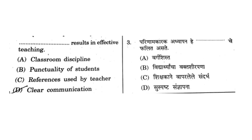Next question: dash dash dash is a result of effective teaching. Options were: A) classroom discipline, B) punctuality of student, C) references used by teacher, D) clear communication. Options A and B are eliminated. Among C and D, it is clear communication of the teacher that matters — clarity of thoughts so that teaching is not confusing. So the correct option is D — clear communication.